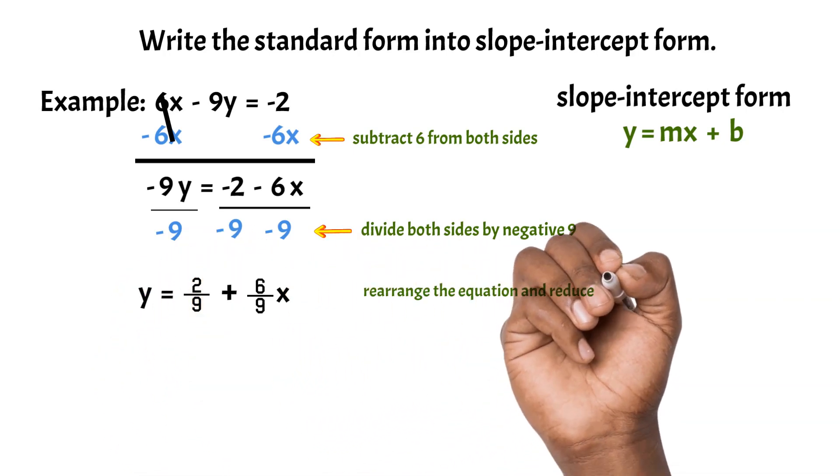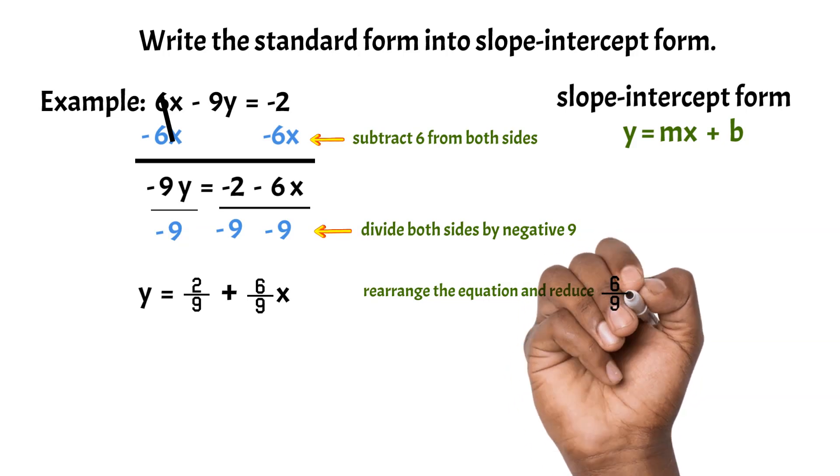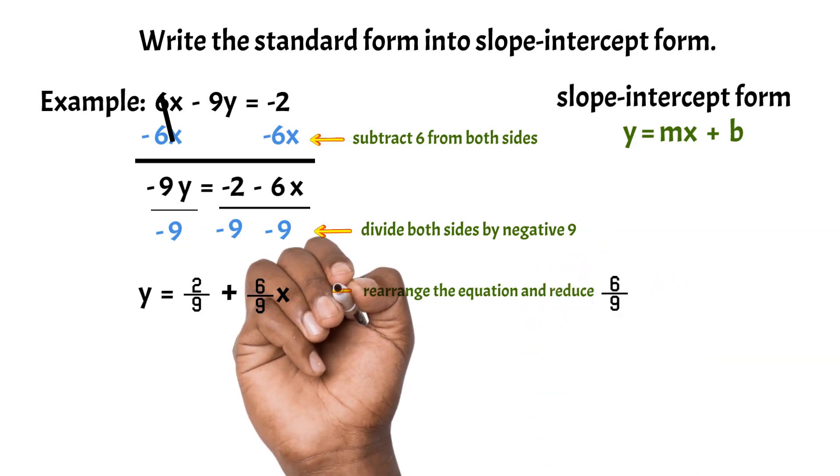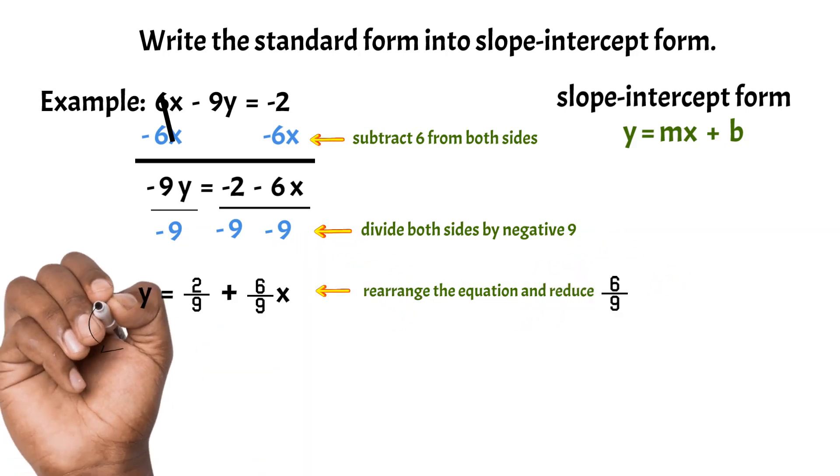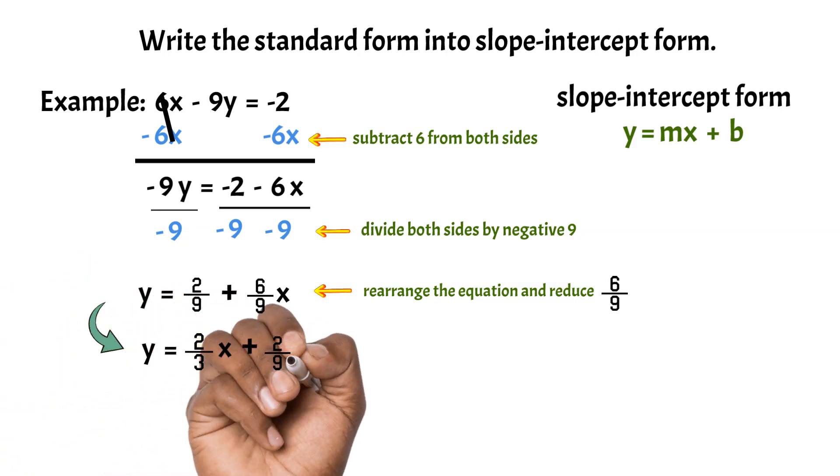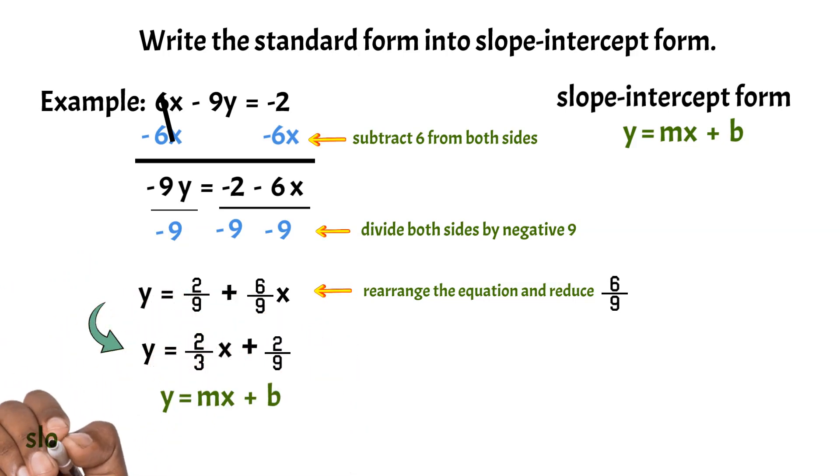Let's rearrange it to look like y = mx + b and simplify the 6/9. Finally, the standard form is y = 2/3x + 2/9. The slope is 2/3 and the y-intercept is 2/9.